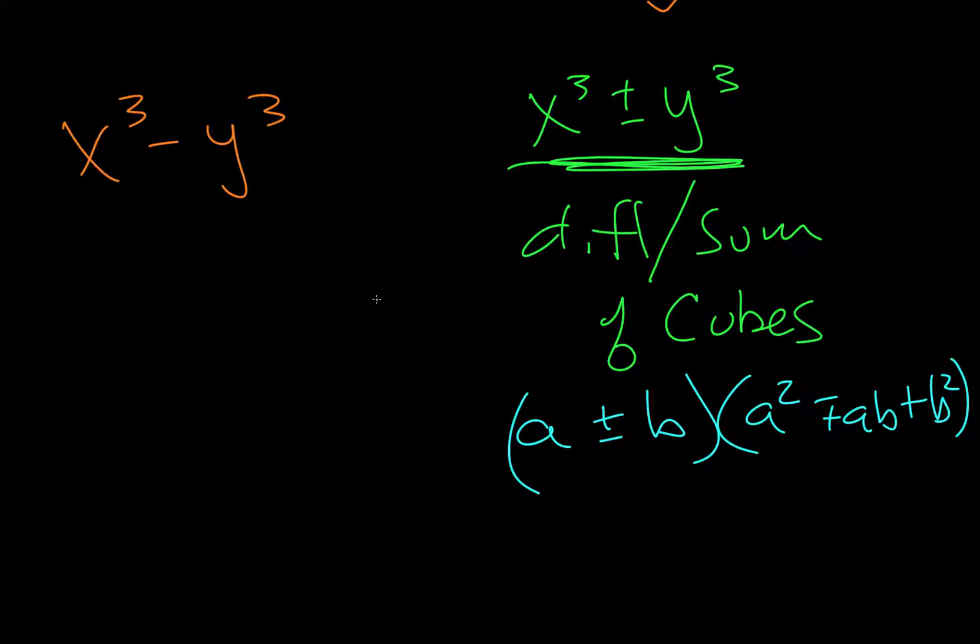So what the a and the b are, in this case, a is going to be x. It's whatever's being cubed. And then b is y. And then we determine this based on what we have here. So since we start with a negative sign, we're going to follow the bottom of everything. So I do x minus y.